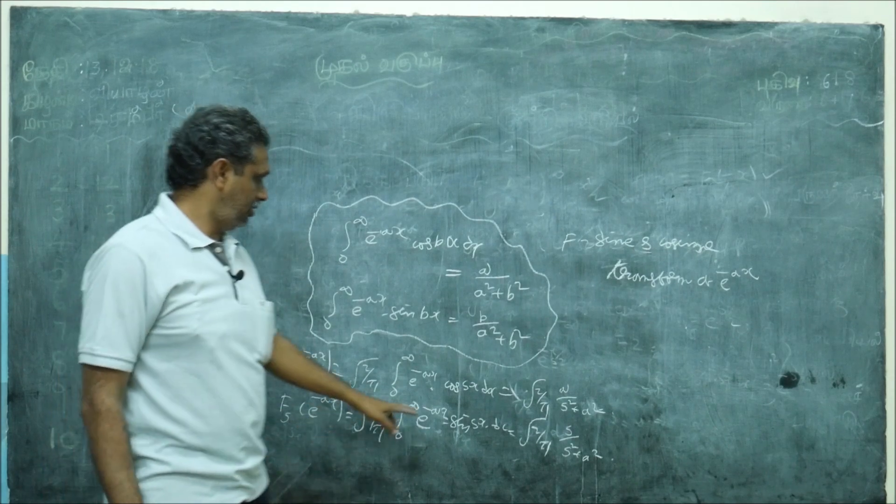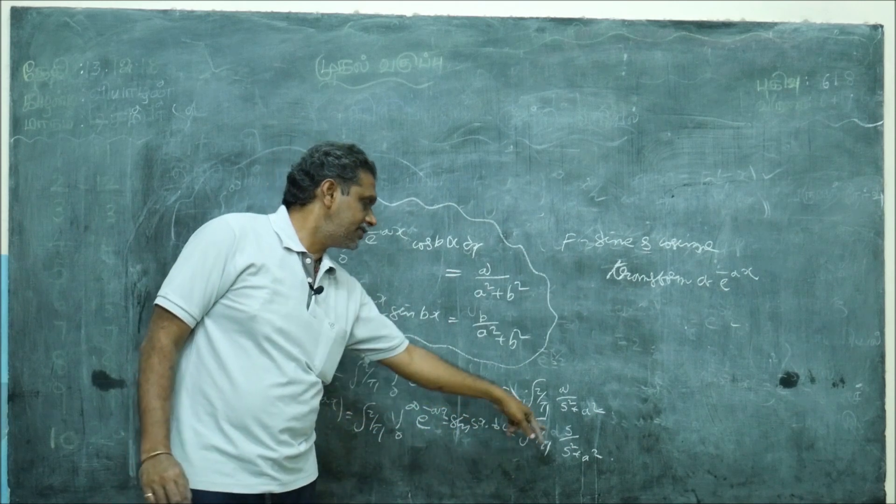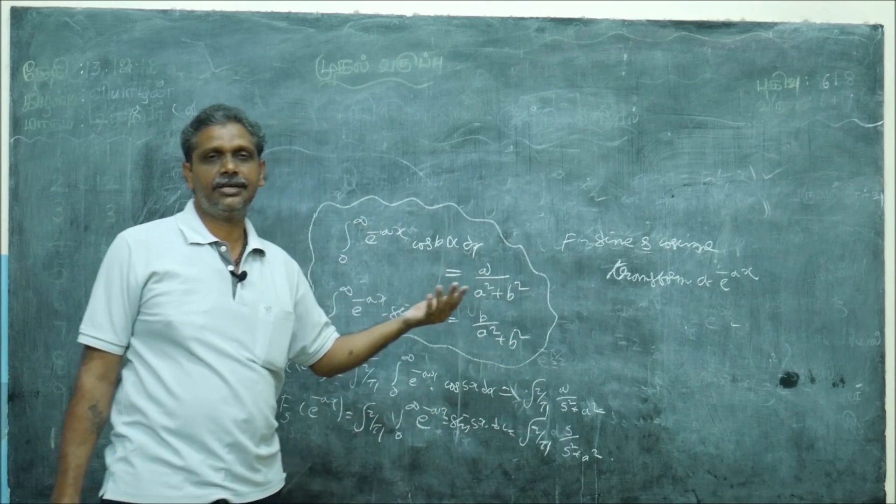Root 2 by pi, s by s square plus a square. So the denominator is s square plus a square, no problem. e power a then x coefficient sine cos, b is what s means.